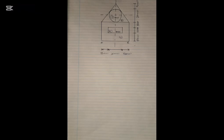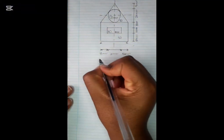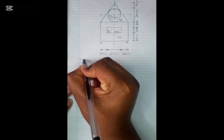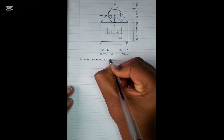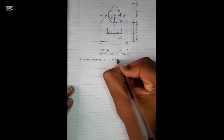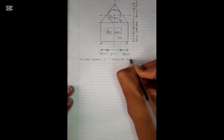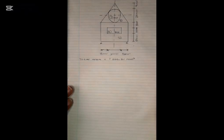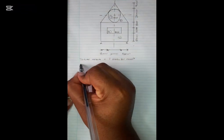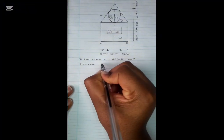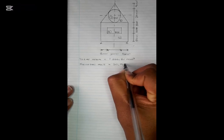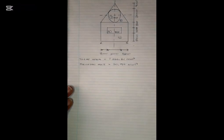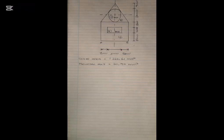We calculated the total area and we got 1266.61 mm², and then we calculated the neutral axis and we got 20.94 mm. So now we are going to calculate moment of inertia.